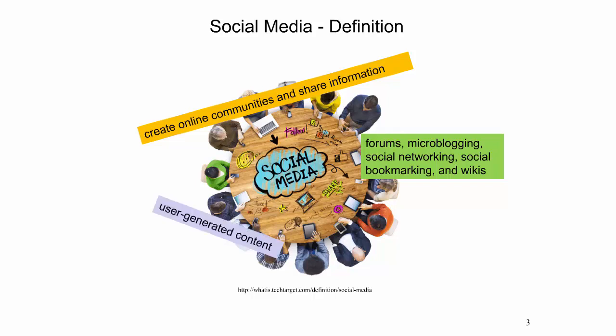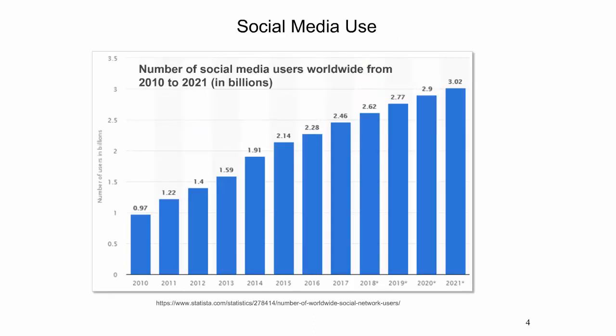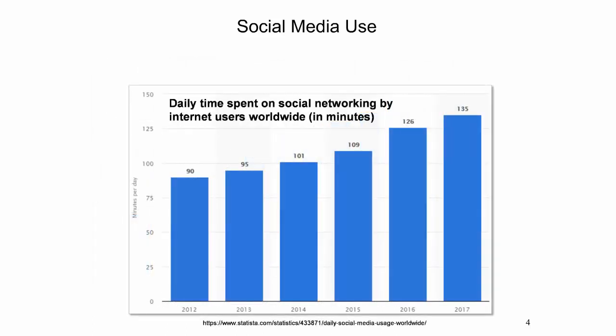Social networks enable users to communicate beyond local or social boundaries. They also offer features such as social games and the ability to share user-generated content, such as photos and videos. This bar chart plots the average daily usage of social media worldwide over the years. The number of social media users is steadily increasing: total users reached 1 billion in 2011, surpassed 2 billion in 2015, and is expected to reach 3 billion in 2021. Furthermore, time spent engaging with social networks on a typical day has been increasing over time as well.